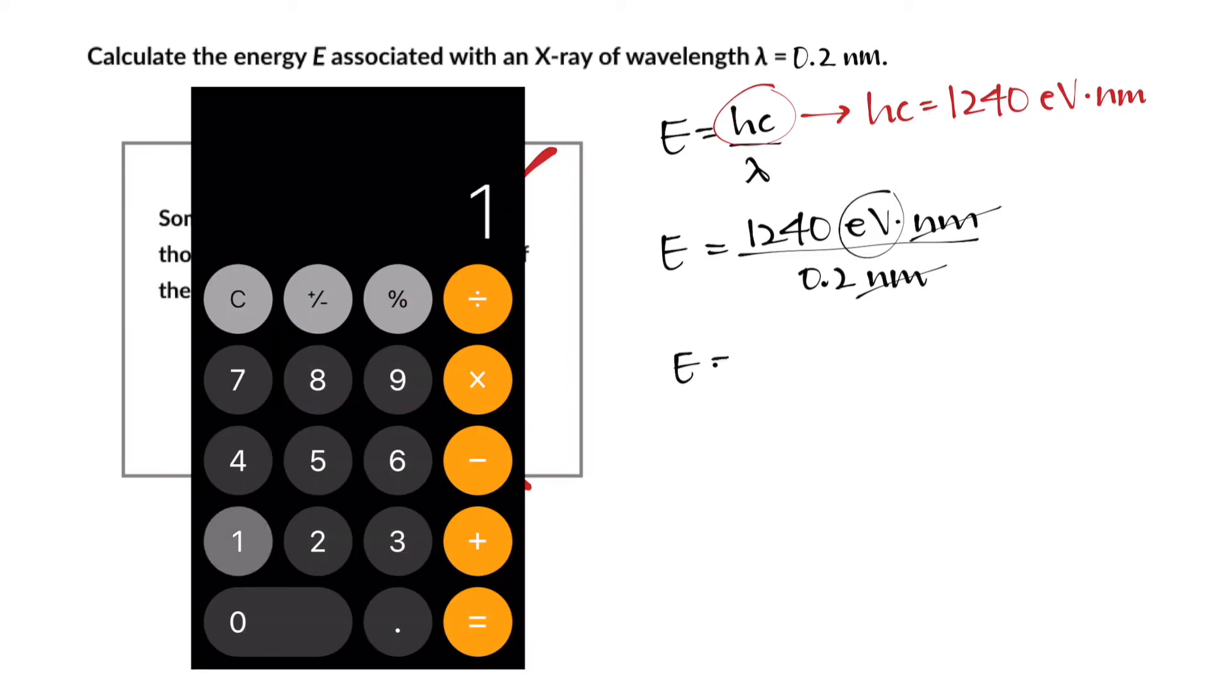Just divide 1240 by 0.2 and you'll get 6200 electron volts.